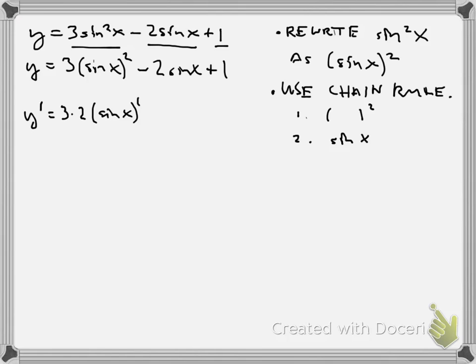But then after you do that, you always should finish with the derivative of the inside. And the derivative of the inside is cosine x. So that's the chain rule for the first term. The second term just becomes 2 times cosine of x.